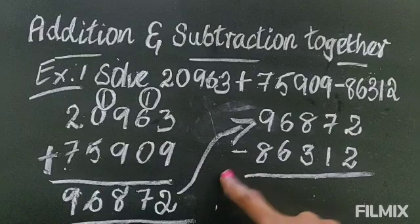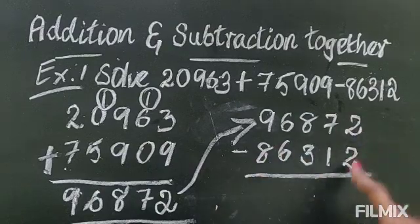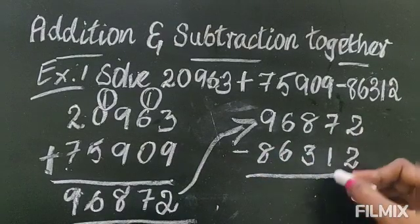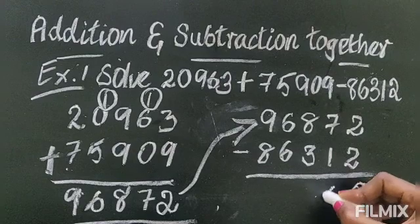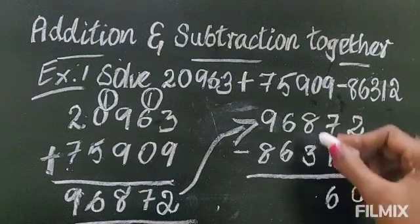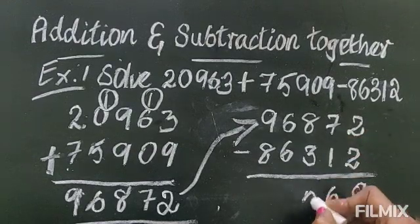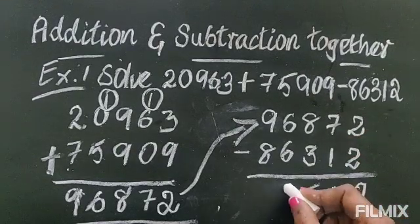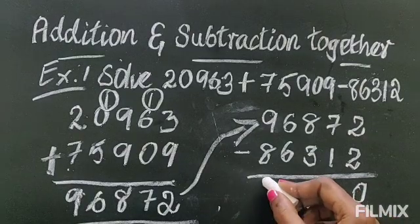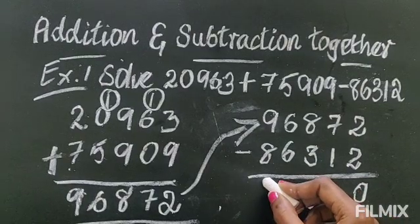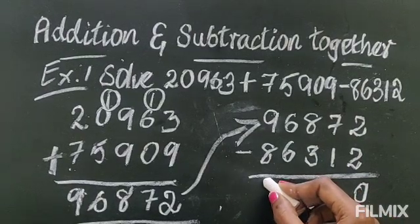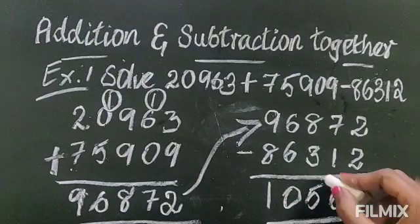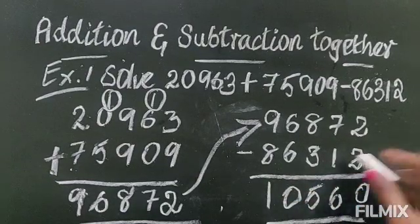Now this is minus so you will minus. 2 minus 2 is 0. 7 minus 1 is 6. 8 minus 3 is 5. Next 6 minus 6 is 0. 9 minus 8 is 1. So this is the answer. This is the answer you have to write.